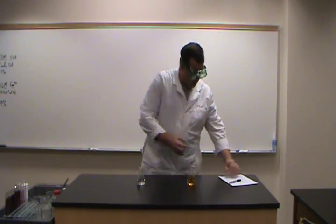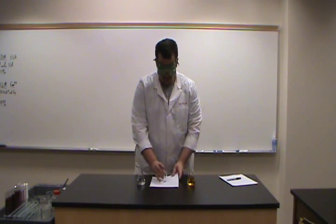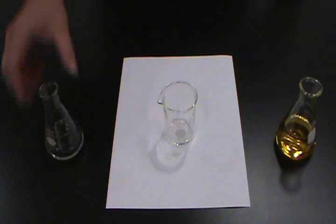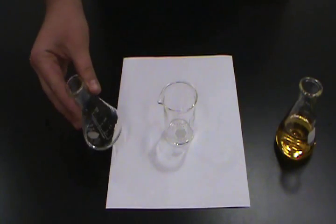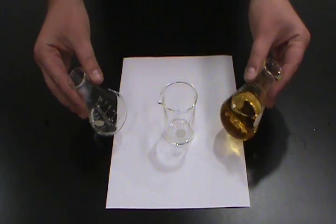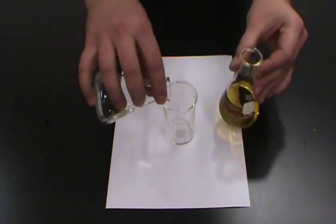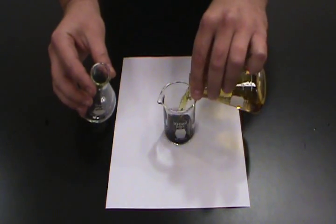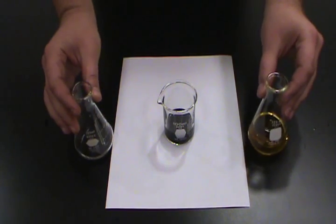If I take a beaker, and let me set that on some white paper to make it a little easier to see. I have a solution of sulfosalicylic acid. That's a colorless solution. I've got a yellow solution containing iron-3-plus ions. And if I mix them together...